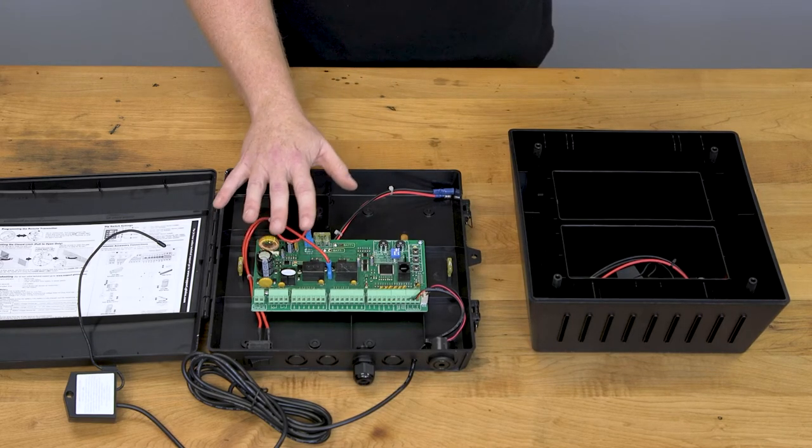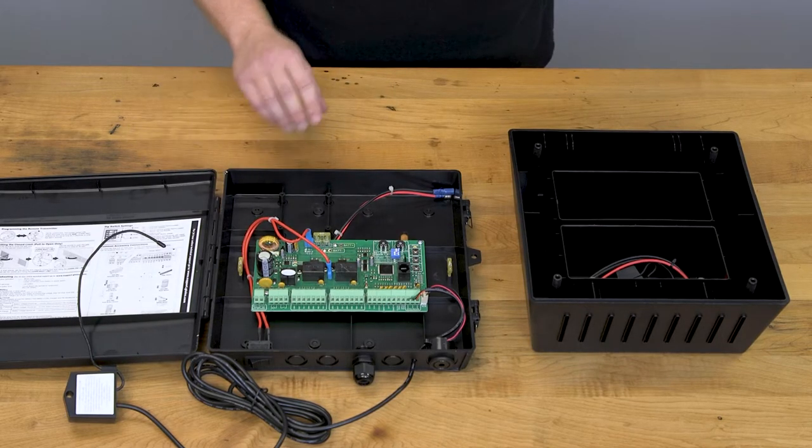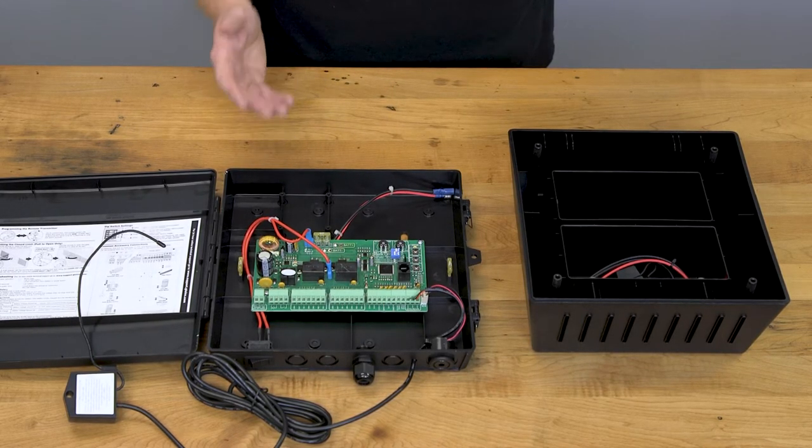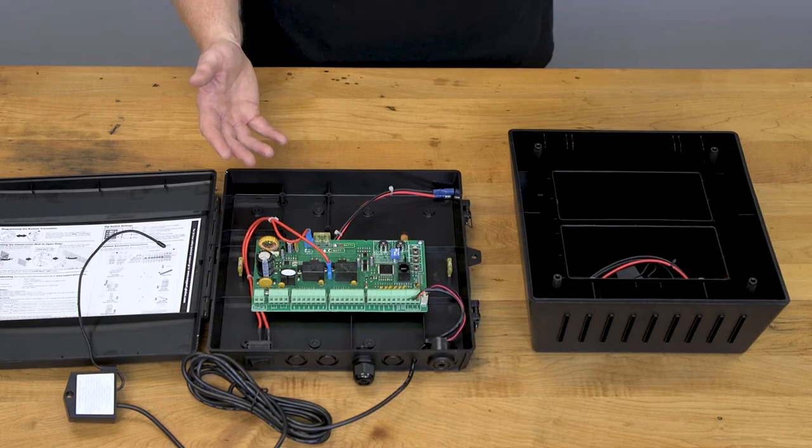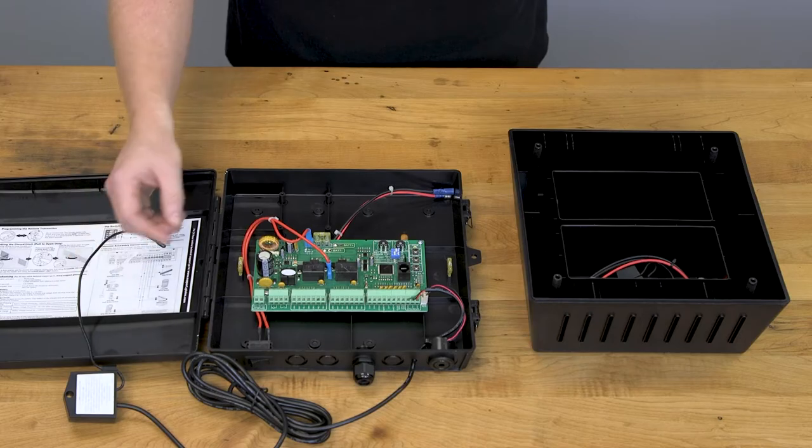The front portion of the control box houses your circuit board as well as all your power and accessory connections. This also has all your controls for stall force, dip switches, auto close timing, and pairing your car transmitters. This connected receiver wire is what picks up the signal from your car transmitters to trigger the gate to open.